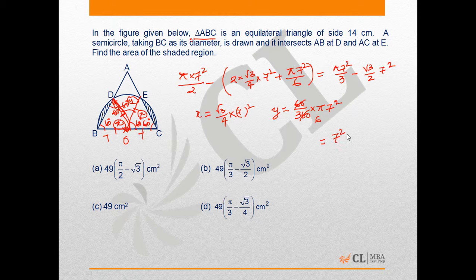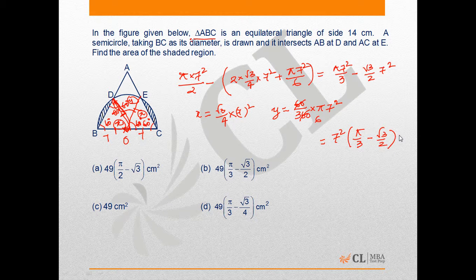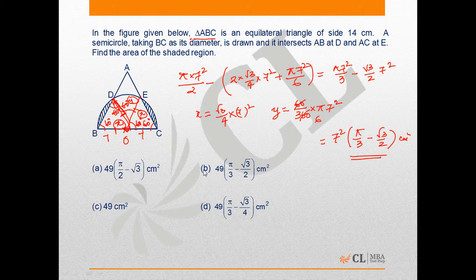Taking 7², that is 49 common, we will have the answer as 49(π/3 - √3/2) cm² as the answer. So the right option over here is B.